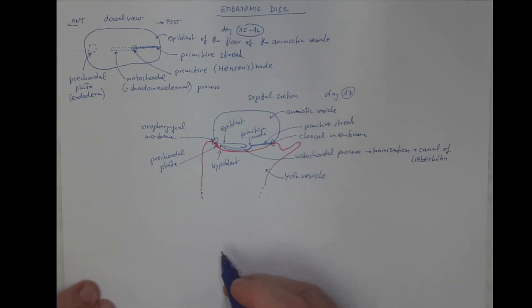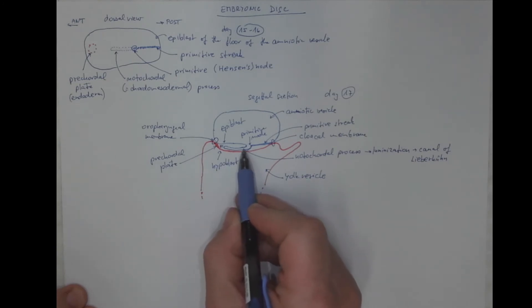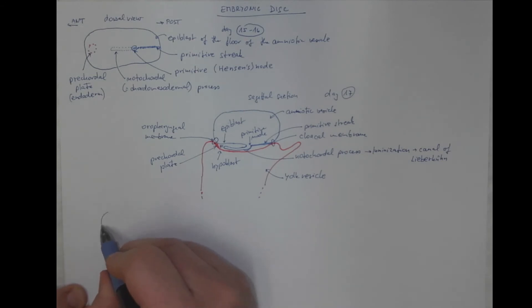A day later, the barriers between these two structures will break down, and the cell populations from the amniotic and yolk vesicle will mix together. So it will look like this. The primitive streak, the primitive node, and now the wall of the notochordial process, or the canal of Lieberkühn, will break down.